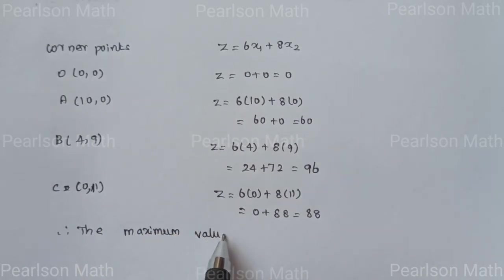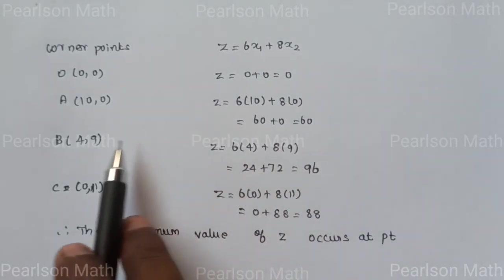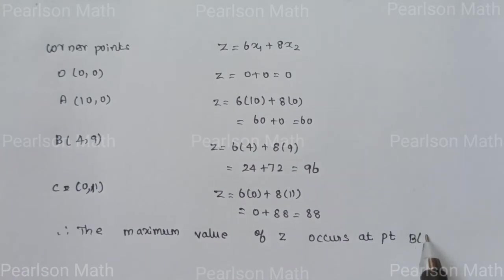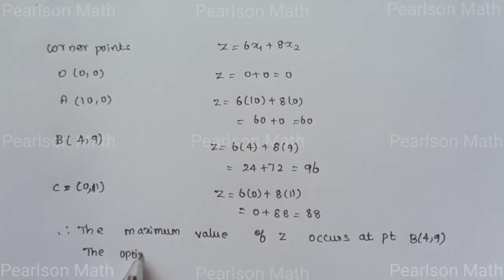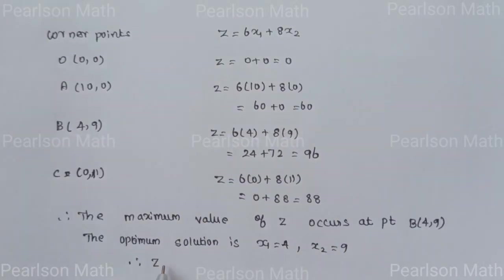Therefore, the highest point is 96. The maximum Z value is 96, which occurs at point B (4, 9). Therefore, the optimum solution is x₁ equals 4, x₂ equals 9, and Z maximum equals 96. That's the first problem.